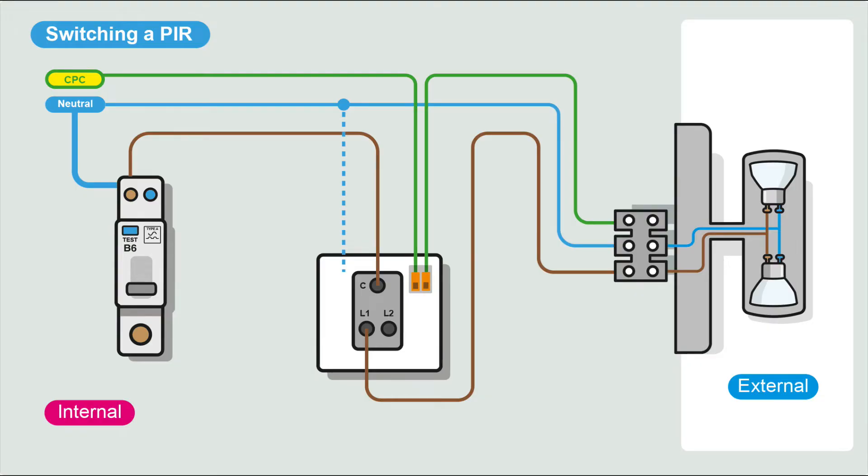So here's a circuit without the PIR added. This is just a switch. We have the power coming in - in this case it's from a B6 type A RCBO. Lighting circuits now require RCD protection. Live comes into common in the switch, leaves L1, and goes to the light. So that's an outside light - you have to physically switch it on or off.